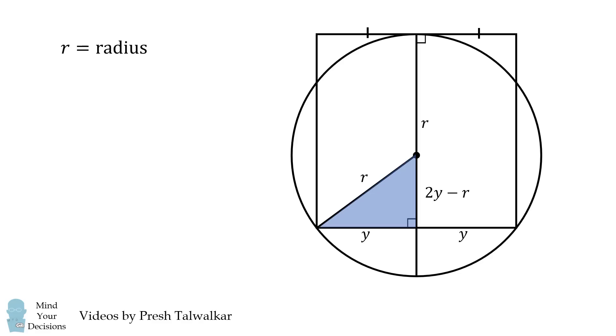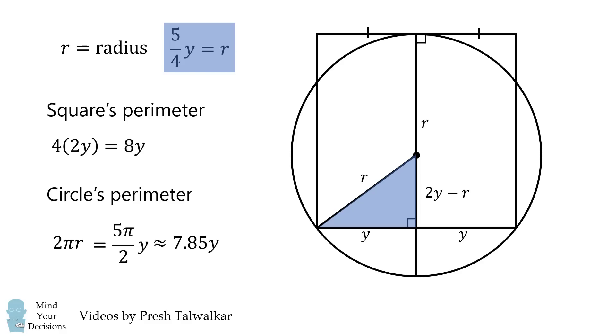We now consider this right triangle. By the Pythagorean theorem, we have 2y minus r of the quantity squared plus y squared is equal to r squared. We can then simplify this equation. And just like before, we end up with a very similar equation. We have 2 possibilities. And we reject y is equal to 0. And this proceeds just like before, where we calculate the perimeter of the square and the circle. And we're going to get that the square's perimeter is going to be larger than the circle's perimeter.